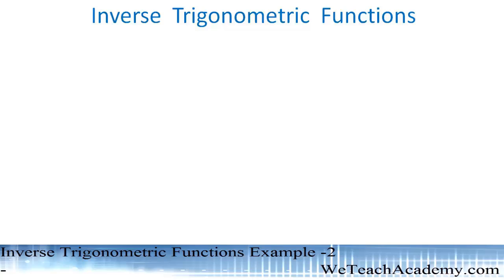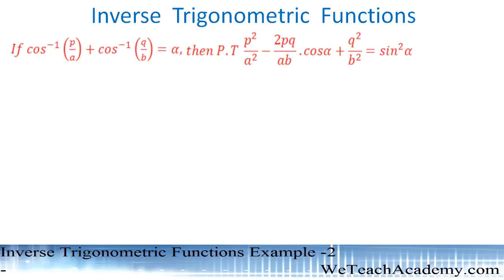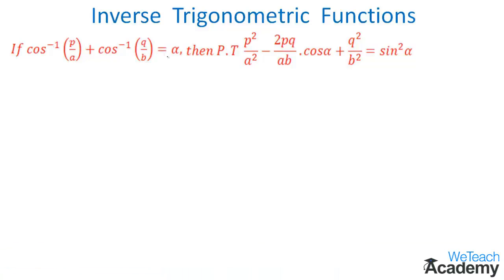Hey guys, in this video we are going to solve an example under the concept called inverse trigonometric functions. The given example is: if cos⁻¹(P/A) + cos⁻¹(Q/B) = α, then prove that P²/A² − 2PQ/AB · cos α + Q²/B² = sin²α.